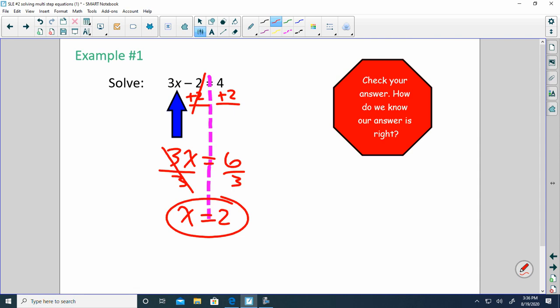That's your answer. You plug your answer back in. You get 3 times 2 which is 6. 6 minus 2 is 4. So the answer does work.